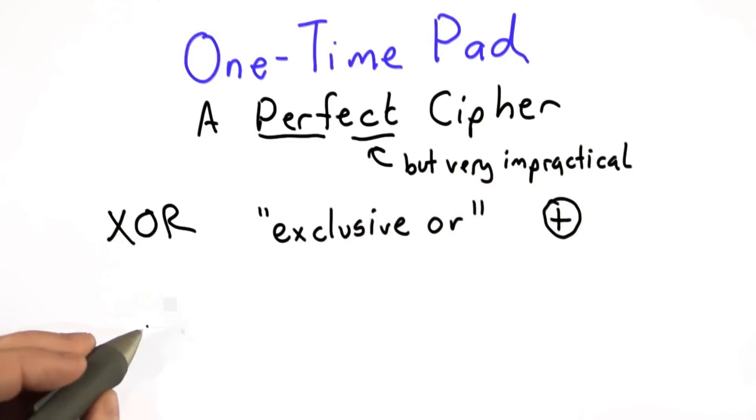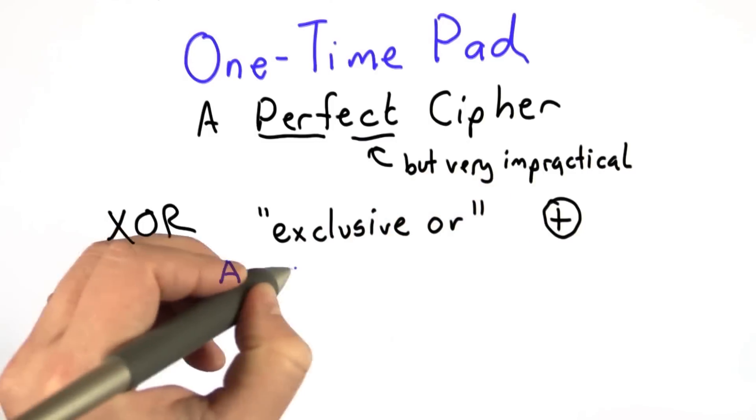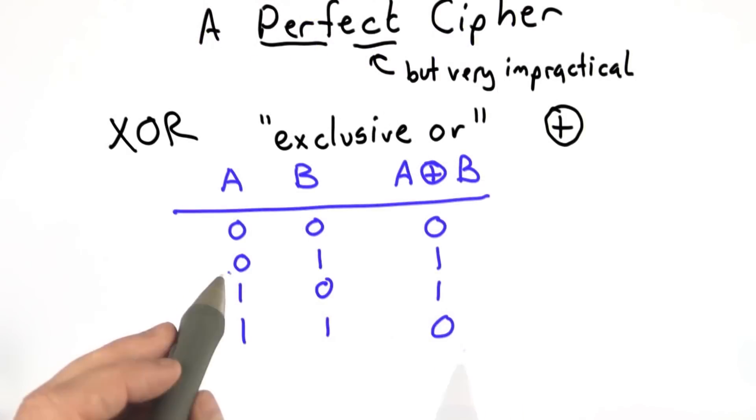The truth table for XOR is this: the value of A XOR B is true if one of A or B, but only one of them is true. So that's why we end up with this truth table.